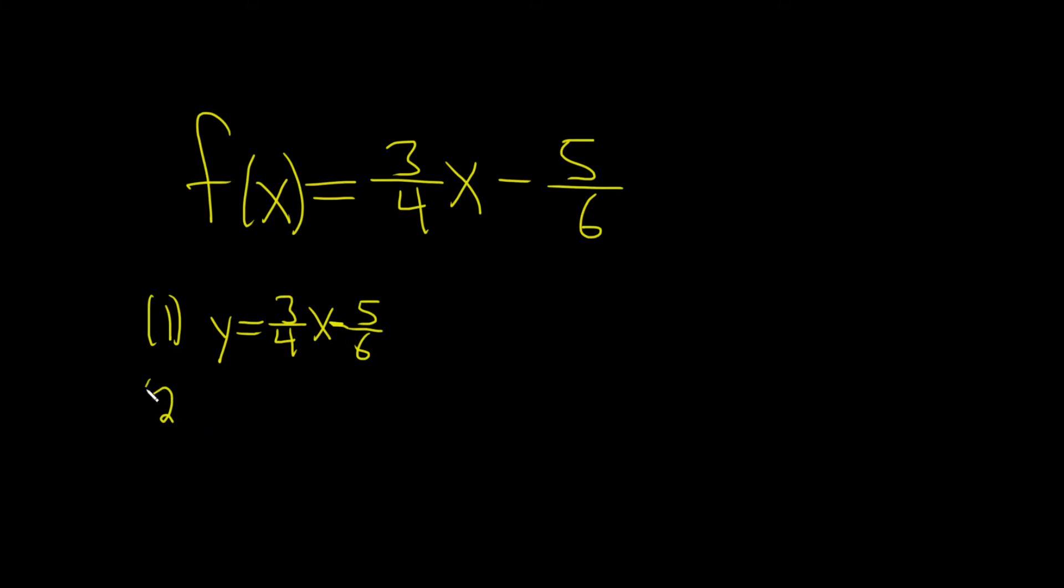The second step is to just switch your x and y. So this is x equals 3 over 4 times y minus 5 over 6.